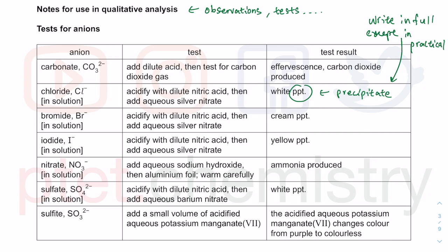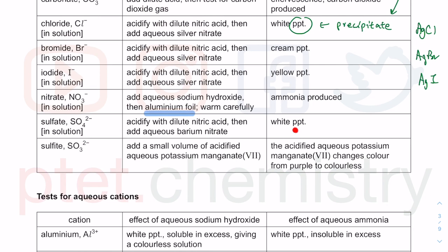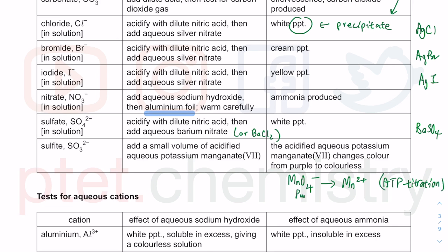The silver nitrate test results: AgCl is white, AgBr is cream, AgI is yellow precipitate. For the nitrate test, aluminium foil together with sodium hydroxide is required — no aluminium foil means no ammonia produced. For sulfate: a white precipitate of barium sulfate (BaSO₄) is formed using barium nitrate or barium chloride. For sulfite, acidified KMnO₄ turns from purple to colorless, as MnO₄⁻ is reduced to Mn²⁺.